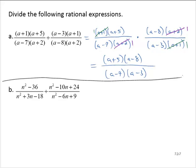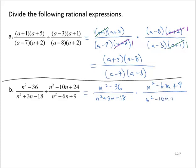Exercise B: (n²-36) over (n²+3n-18), divided by (n²-10n+24) over (n²-6n+9). The first thing we do is rewrite this as multiplication by the reciprocal: (n²-36) over (n²+3n-18), times (n²-6n+9) over (n²-10n+24).